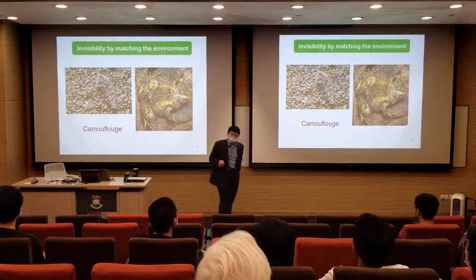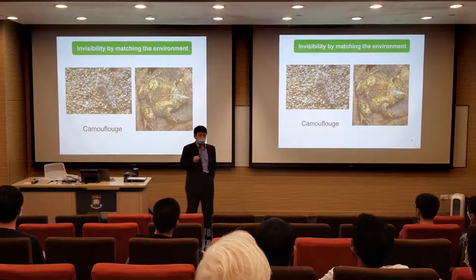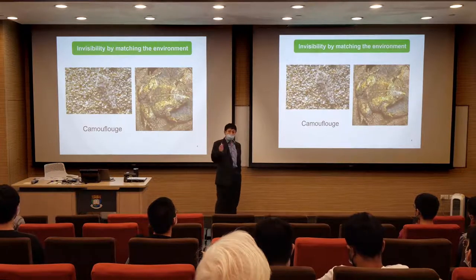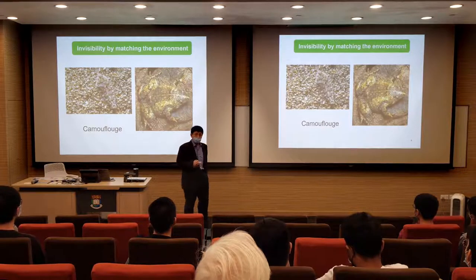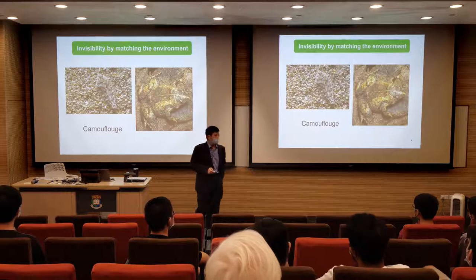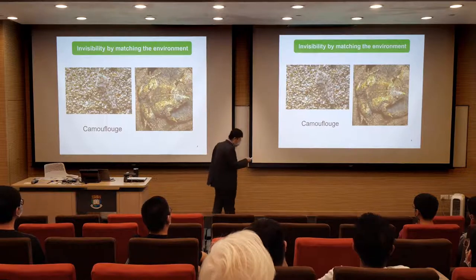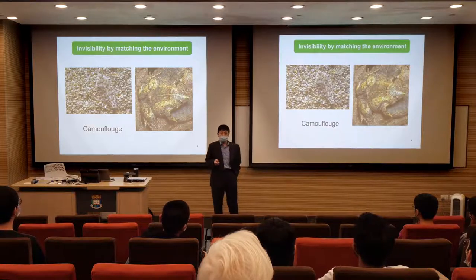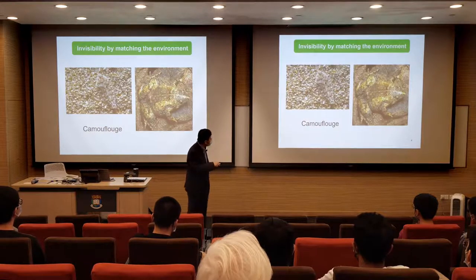Before talking about invisibility cloaks, let me say a few words about camouflage — probably the closest thing to invisibility from nature. After millions of years of evolution, some creatures develop the capability to adjust their skin color or patterns to be very similar to their environment. For example, this fish, and also there's a toad here. Although it's really hard for us to see them, they are not invisible — we still can see them. It's just difficult to distinguish them from the background. This is not true invisibility.